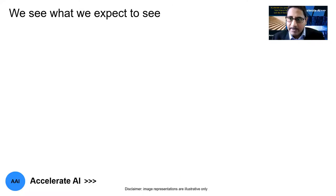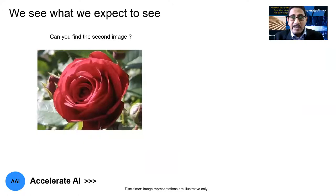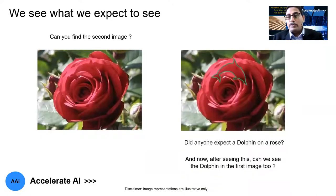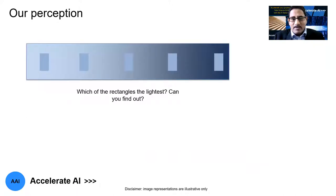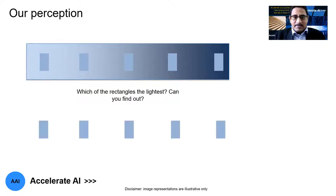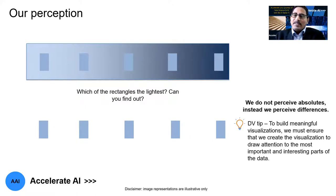Some examples before we get there. Essentially what we are saying is we see what we expect to see. In this picture, can you find the second image? If you outline the dolphin in a different color like green, then you'll be able to see them. Then in another figure, which of the rectangles is the lightest? All of them are actually the same contrast. So essentially we do not perceive absolutes — instead we perceive relative differences. This is a very important aspect when considering data visualization principles and concepts.